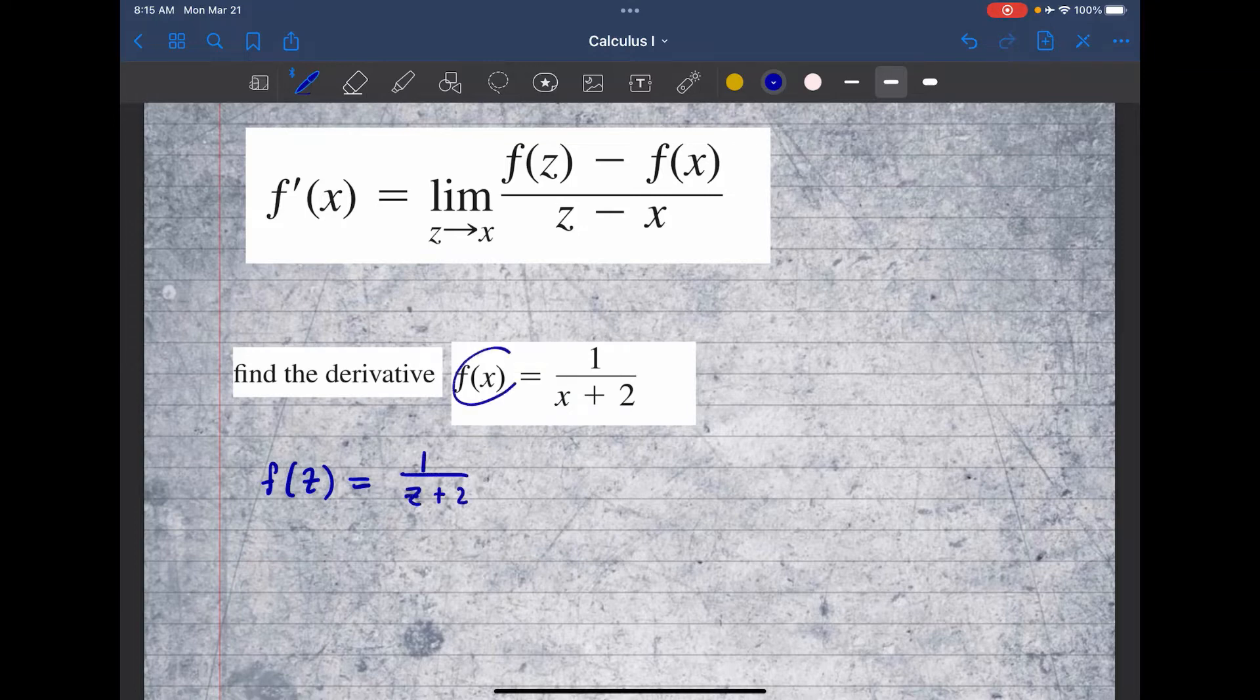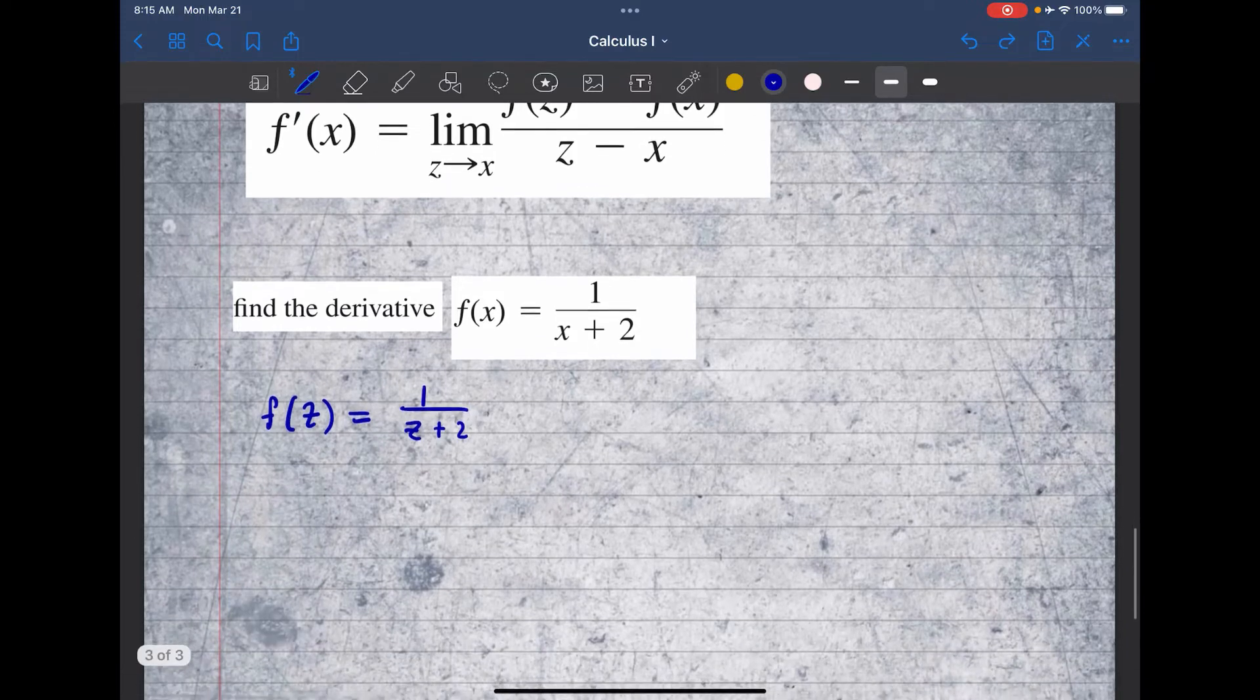And then f(x), well, that's the function itself. And then we're just going to set up this difference quotient and take the limit as z approaches x. So let's go ahead and do that.